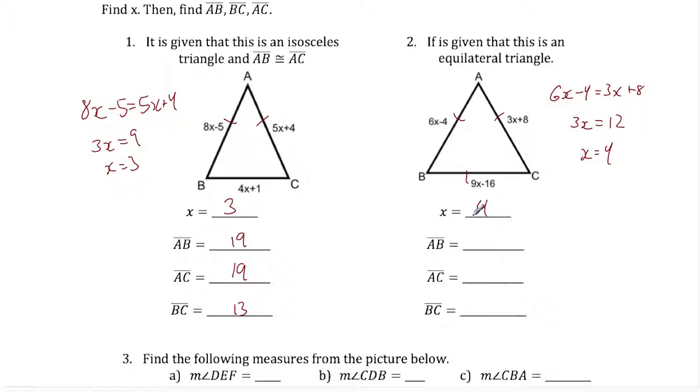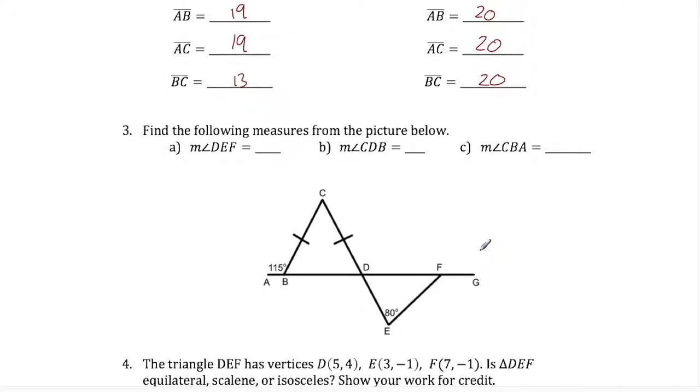We'll know we did this correctly if all these sides are the same length, and we're going to plug it back in just to check anyway. So 6 times 4 is 24 minus 4 is 20. AC is going to be 3 times 4 which is 12 plus 8 which is also 20. And 9 times 4 is 36 minus 16 is also 20. So that checks out, that works out, and those are the answers.